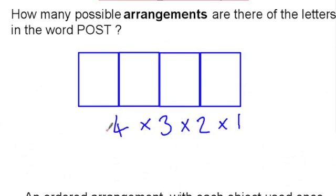This calculation whereby we multiply consecutive decreasing numbers all the way down to one is very common in the topic of arrangements, counting techniques, permutations. And so we have a symbol for this exact calculation. It's called factorial and we use an exclamation mark for factorial.